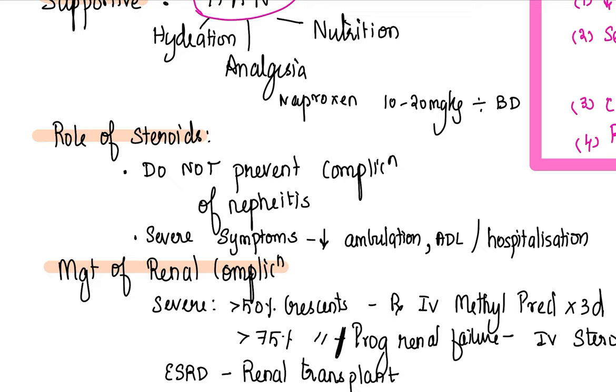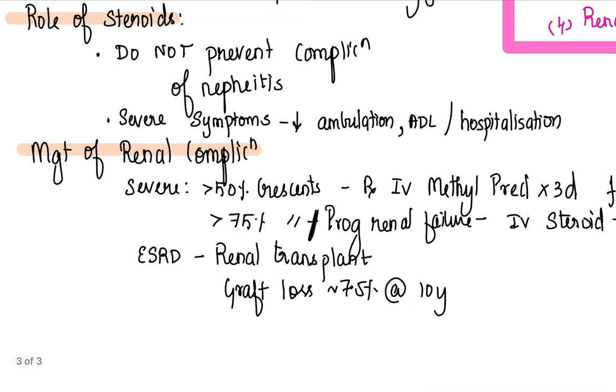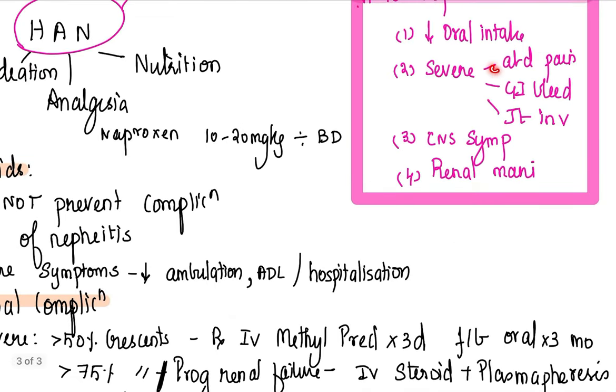When do you give steroids? Please note, I am stressing this point: there is no role for steroids in mild to moderate disease. No role for steroids. Telling I will give this to prevent complication of nephritis, it does not help. Steroids do not prevent complications. Steroids do not prevent renal involvement. Then when are you going to use steroids? You will use steroids in severe GI involvement, severe joint involvement that is going to decrease ambulation, activity of daily living, or hospitalization.